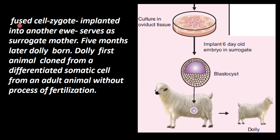If you have a fused cell, this fused cell is called a zygote. But it is not a sexual method of reproduction — the somatic cell has become a zygote. If we do this culture, it will develop in the ovum, and is then implanted into another sheep.